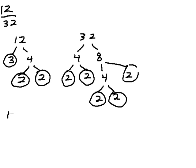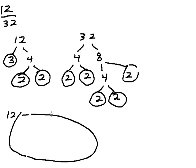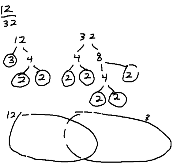Now we make our Venn diagrams. 2 of the 2s are paired up. So this 2 can be paired up with this 2 in the factor tree of 12. And this 2 in the factor tree of 32 can be paired up with this 2 in the factor tree of 12.